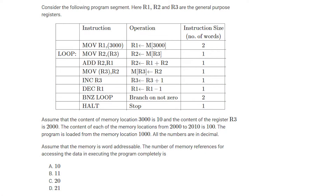Consider the following program segment where r1, r2, and r3 are general purpose registers. Assume that the content of memory location 3000 is 10, the content of register r3 is 2000, the content of each memory location from 2000 to 2010 is 100, and the program is loaded from memory location 1000. All numbers are in decimal.